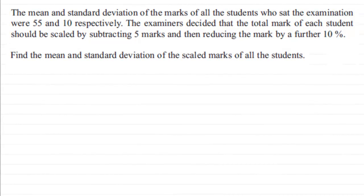Now for this last part of the question, I'll just read it out anyway, but we've got the mean and standard deviation of the marks of all the students who sat the exam with 55 and 10 respectively. And we're told that the examiners decide that the total mark of each student should be scaled by subtracting 5 marks and then reducing the mark by a further 10%. So we've got to find the mean and standard deviation of the scaled marks of all the students.